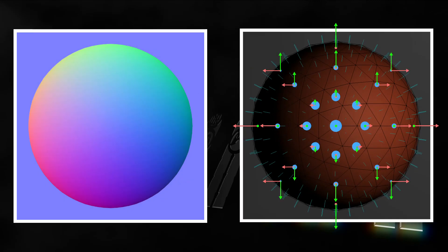Here's the normal map with all color channels again. Now you should understand why normal maps always are bluish. The red channel ranges from 0 to 255, and so does the green channel. But the blue channel always starts at 127, so overall there's always more blue than red or green. You can also understand why flat areas are always light blue: it's made of 127 red (X component is 0), 127 green (Y component is 0), and 255 blue (Z component is 1).